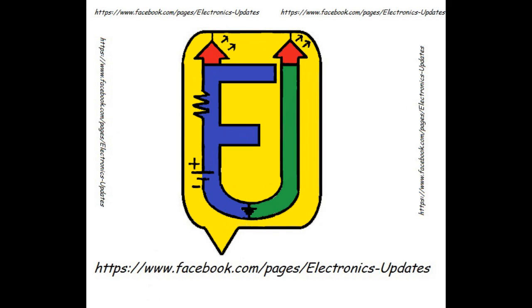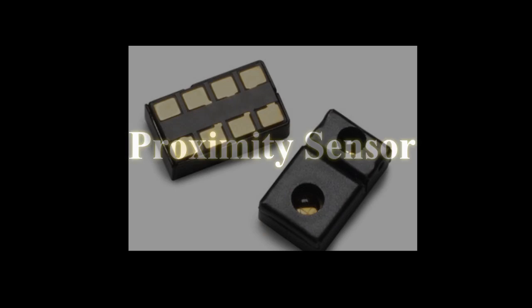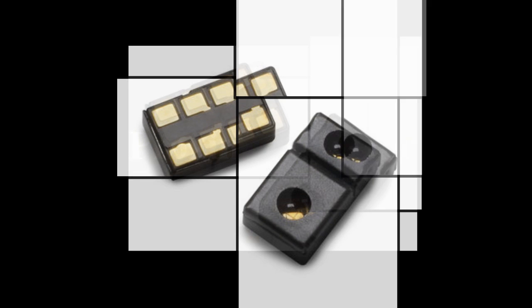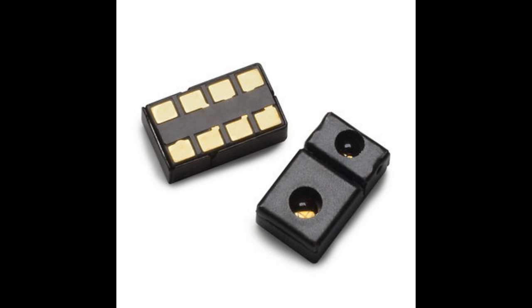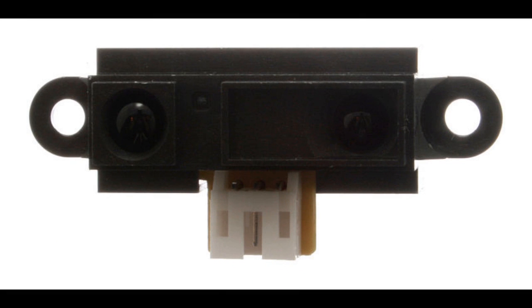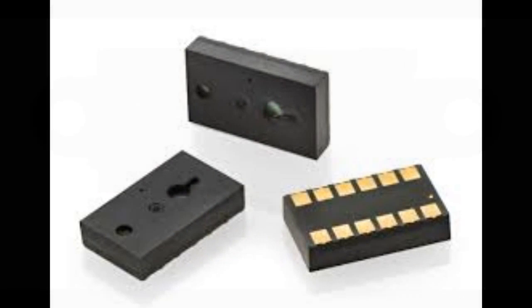Hello friends, in this video I am going to explain what a proximity sensor is and why it is used in mobile phones, and what its operation is. Here, different types of proximity sensors are shown in the image. A proximity sensor is a sensor able to detect the presence of nearby objects without any physical contact.